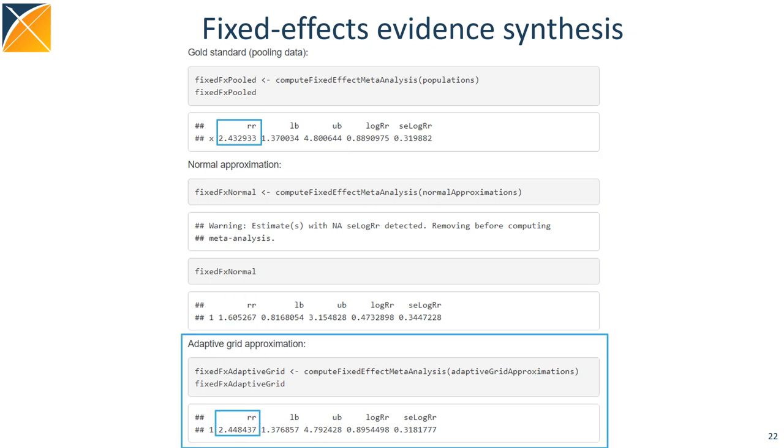If we use the adaptive grid approximations, we use data from all sites, including those that have zero counts. We see we now get an estimate very close to the ground truth.